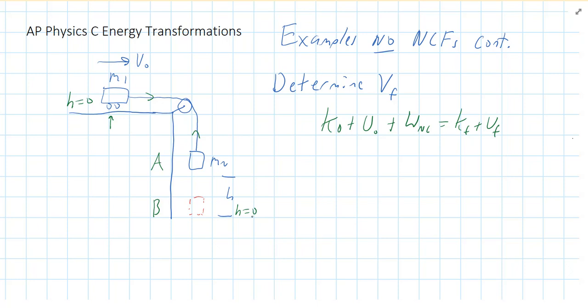So at the beginning, at point A, both carts are moving, so there's going to be two k nots. Cart 2 does have a height, so there's going to be a potential energy. There's no non-conservative work. We just talked about that. There is going to be a final kinetic energy. Both things are moving at point B. And both objects are at their respective zero heights at point B, so there's not going to be a potential energy final.